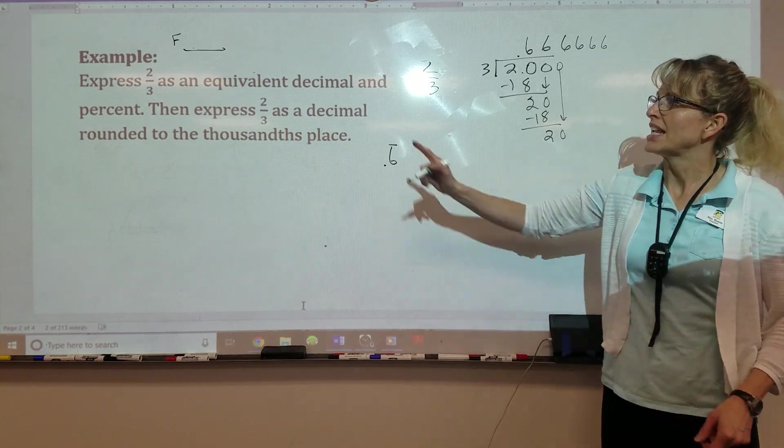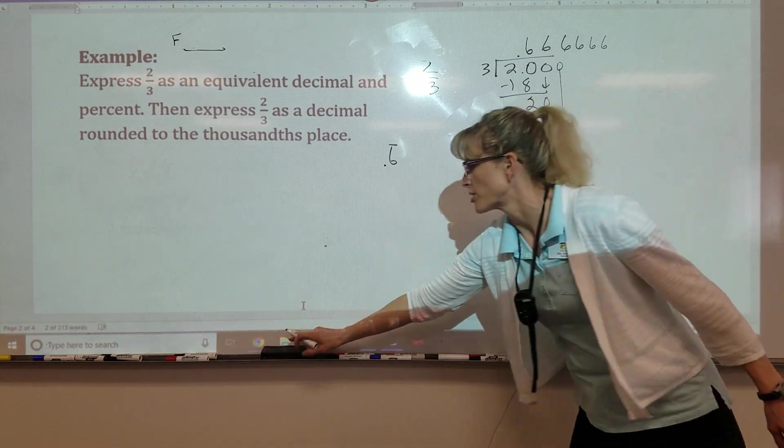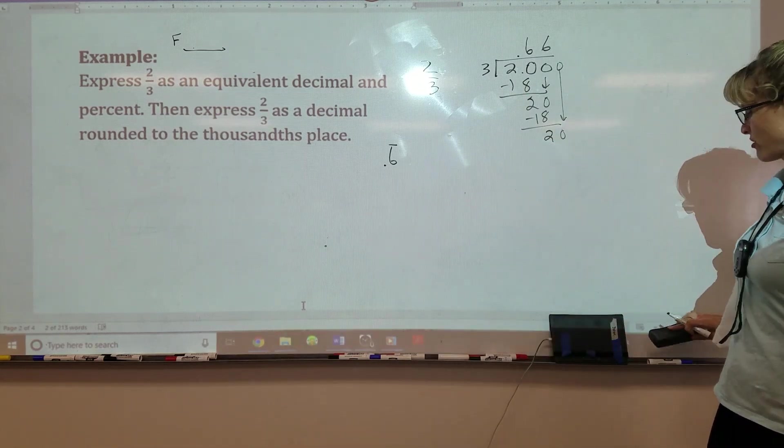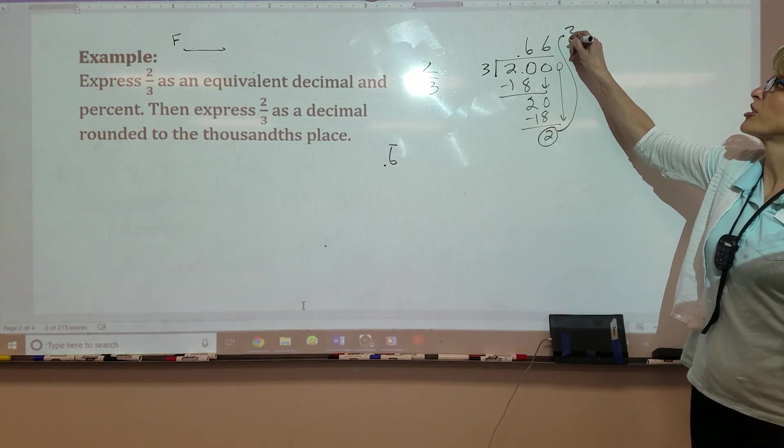So here's my decimal. It's repeating. Now I need to do a percent. Here's a cool way to do a percent. You only need two digits to start with for your percent. So I'm going to get rid of the rest. I've got my two digits. Your remainder, though, becomes your numerator.